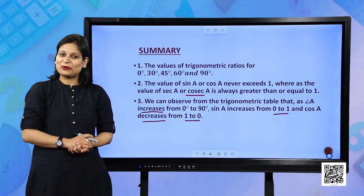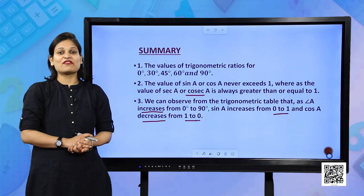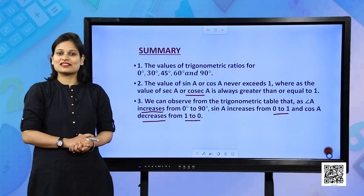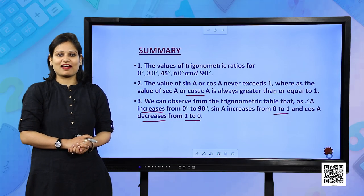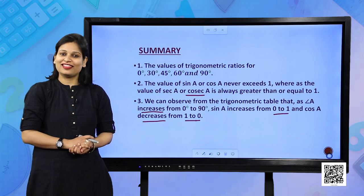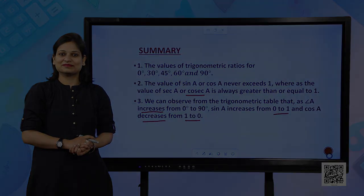The value of sin A or cos A never exceeds 1, whereas the value of sec A or cosec A is always greater than or equal to 1. From the trigonometric table, as angle A increases from 0 to 90°, sin A increases from 0 to 1 and cos A decreases from 1 to 0. I hope you have understood the concepts discussed today. Thank you.